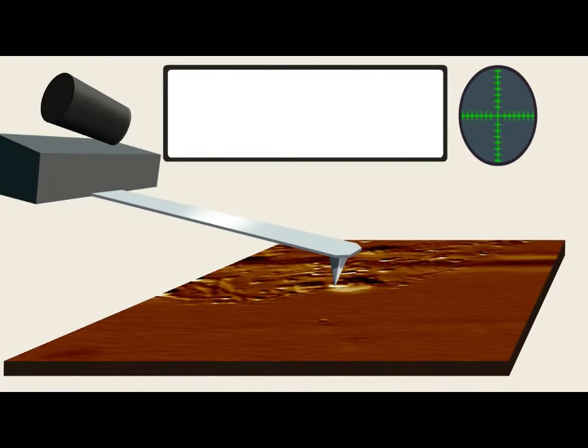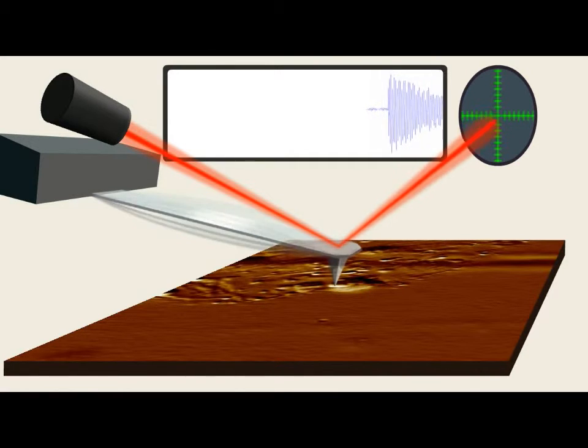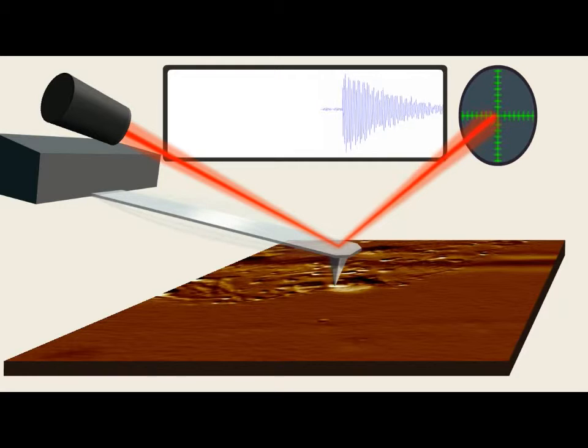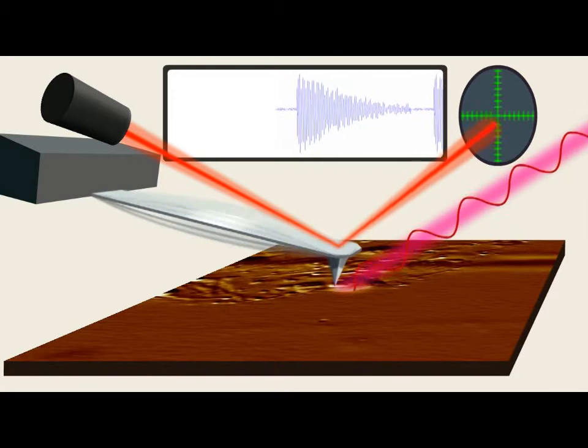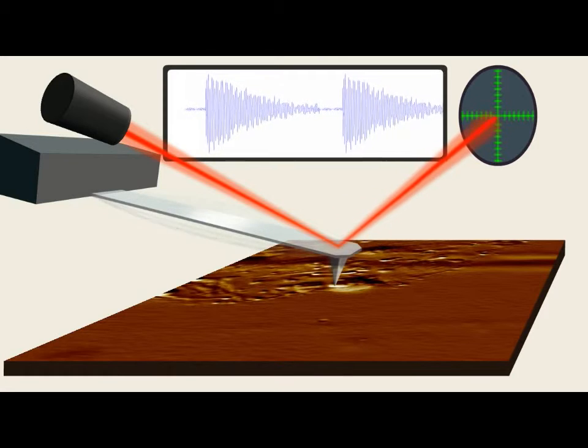That thermal expansion of the sample kicks the cantilever into oscillation. These blue traces up on the top are basically the deflection of the cantilever every time we have a burst of infrared radiation absorbed by the sample.